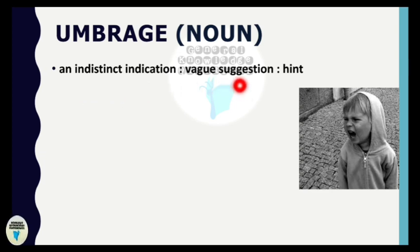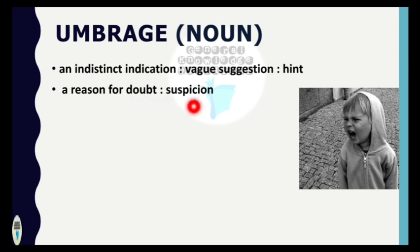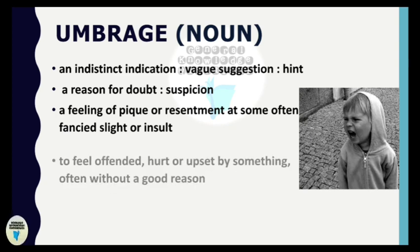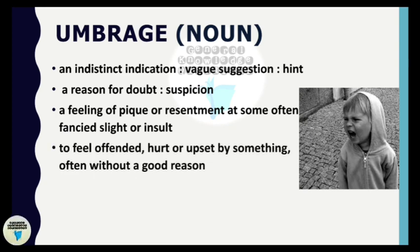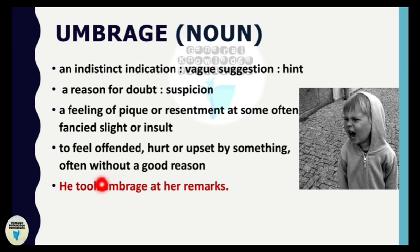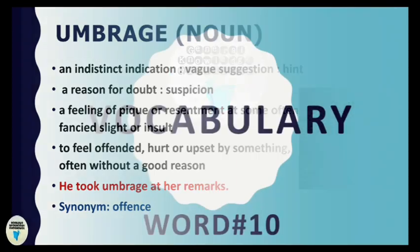The next word is 'umbrage.' It means an indistinct indication, a vague suggestion or hint, or a reason for doubt or suspicion, or a feeling of resentment at some often fancied slight or insult — to feel offended, hurt, or upset by something, often without a good reason. It is usually used in a negative or disapproving way. For example: 'He took umbrage at her remarks.' A synonym is: offense.